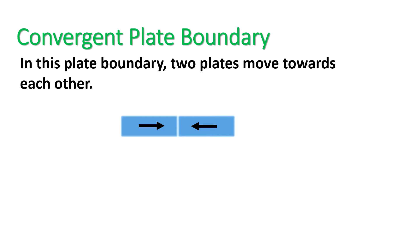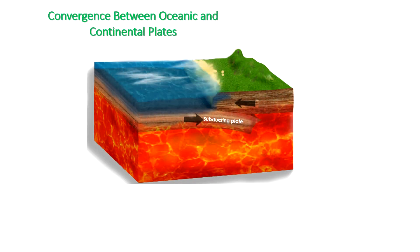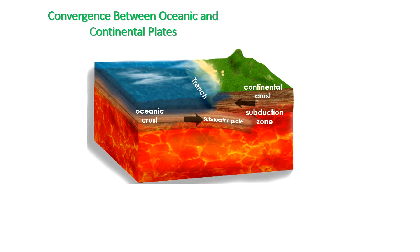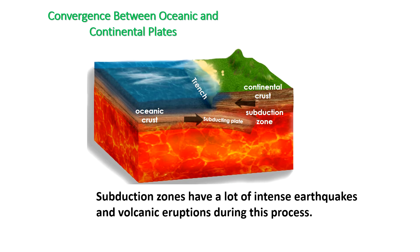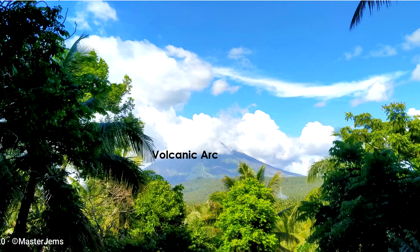Convergent plate boundary may occur between oceanic and continental plates, between two oceanic plates, and between two continental plates. When an oceanic plate collides with a continental plate, the oceanic plate plunges beneath the continental plate because it is denser. This process is called subduction, and it occurs at oceanic trenches — the entire region is known as a subduction zone. Subduction zones have intense earthquakes and volcanic eruptions. The subducting plate causes melting in the mantle above, magma rises and erupts creating volcanoes called a volcanic arc.